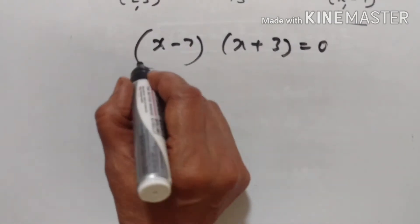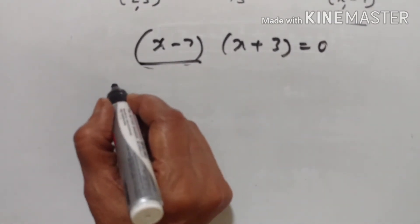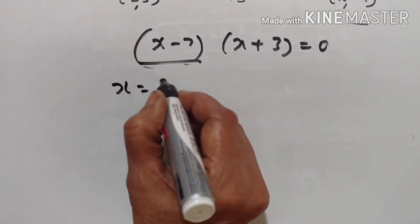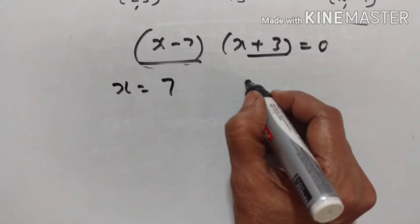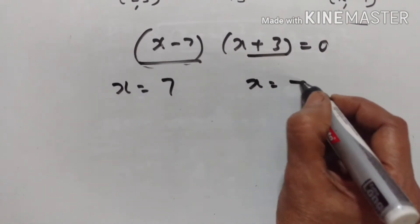If (x - 7) = 0, then x = 7. If (x + 3) = 0, then x = -3. So there are two values of x.